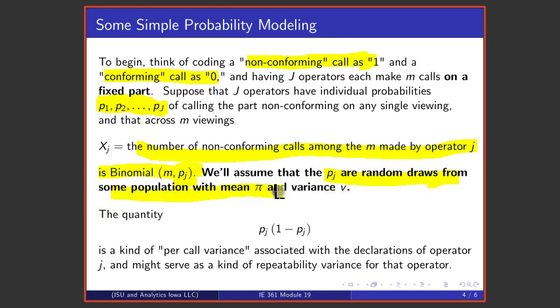In addition to that binomial modeling, we're going to assume that the p's are random draws from some population, and we're going to call the mean of that population π and the variance V.